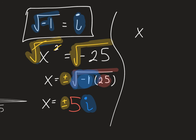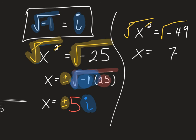One more example: x squared equals negative 49. Taking the square root of both sides gives just x on the left. The square root of 49 is 7, and the square root of negative 1 is i. Since we took the square root of both sides, we write plus or minus. So x equals plus or minus 7i.